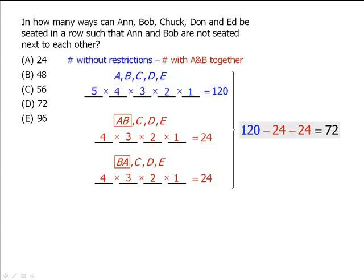We now can calculate 120 minus 24 minus 24, which equals 72. So there are 72 possible arrangements such that Ann and Bob are not seated together. So our answer here is D.